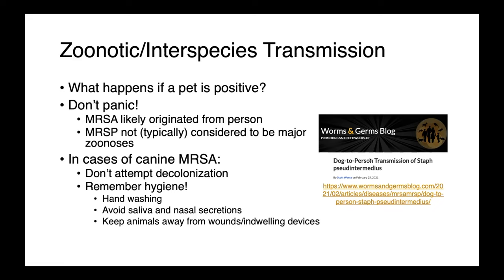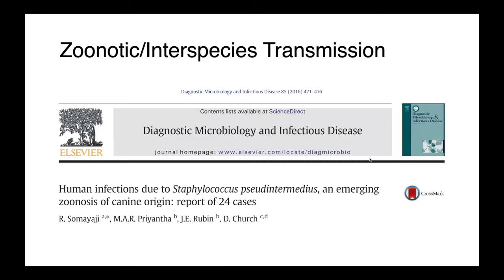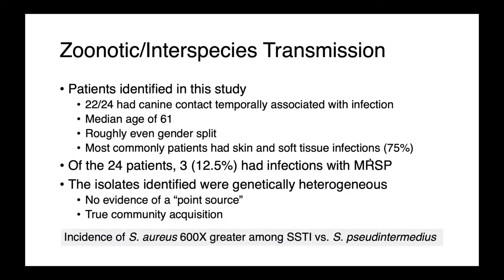This is a resource helpful for both future veterinarians and also vets to share with their clients to help them take the most appropriate protective measures. Human infections with staph pseudintermedius do occur. This was a study I had an opportunity to be involved with with infectious disease physicians from Calgary, Alberta, and we were able to report and describe 24 cases of people with staph pseudintermedius infections in that area. Of the 24 patients identified, 22 had canine contact that was temporally associated with the infection, so there was good evidence this had been acquired from a dog.